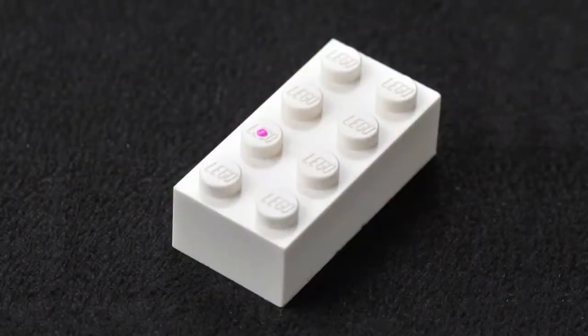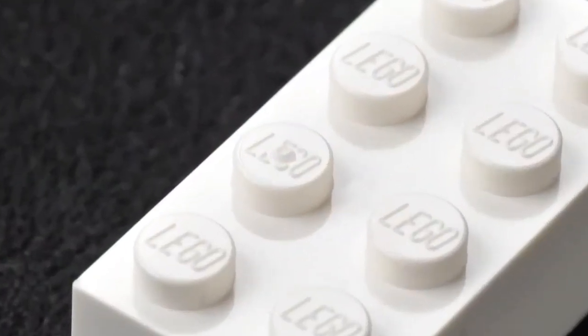One impressive example of injection molding is the Lego brick. You can see the injection point in the middle of a stud. But this is not from a gate or a sprue.